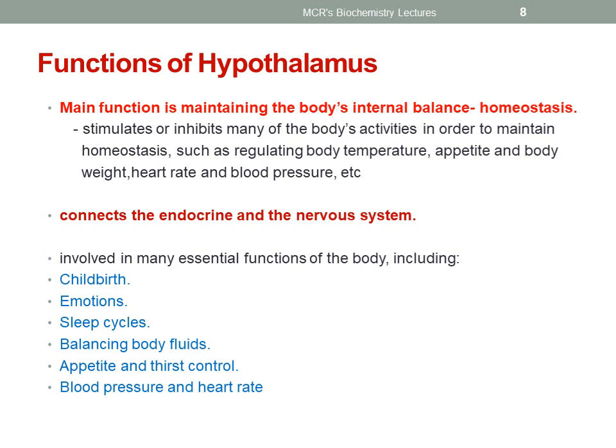Now let's see about the functions of the hypothalamus. The prime function of the hypothalamus is maintaining the body's internal balance, that is homeostasis. The hypothalamus stimulates or inhibits many of the body's activities in order to maintain homeostasis, such as regulating body temperature, appetite and body weight, heart rate and blood pressure. The next most important function is that it connects the endocrine and the nervous system.